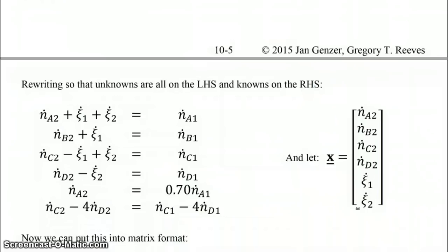And what we're going to do is we're going to rewrite the equations, even the first four equations which were already linear, and we're going to move it so that all the unknowns are on the left-hand side and the knowns on the right-hand side. Now the knowns are the four molar flow rates coming in as you saw in this problem specification, and the unknowns are the four molar flow rates coming out and ξ1 and ξ2.